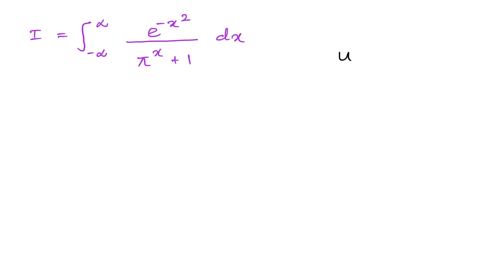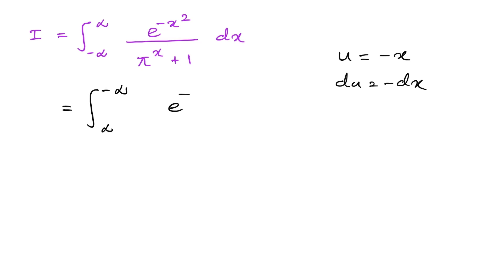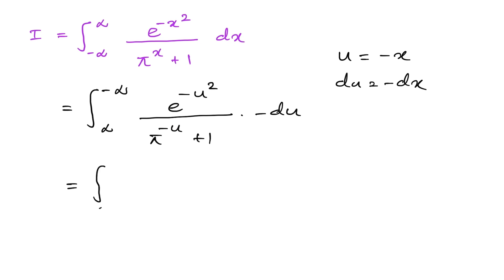We take u equal to minus x, so du equals minus dx. Plugging in, the limits go from infinity to minus infinity, and e to the minus x squared becomes e to the minus u squared. The denominator pi to the x becomes pi to the minus u plus 1, and dx becomes minus du.